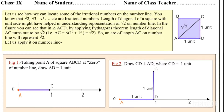You know that √3, √2, √5 etc. are irrational numbers. The length of the diagonal of a square with unit side might have helped in understanding the representation of √2 on the number line.